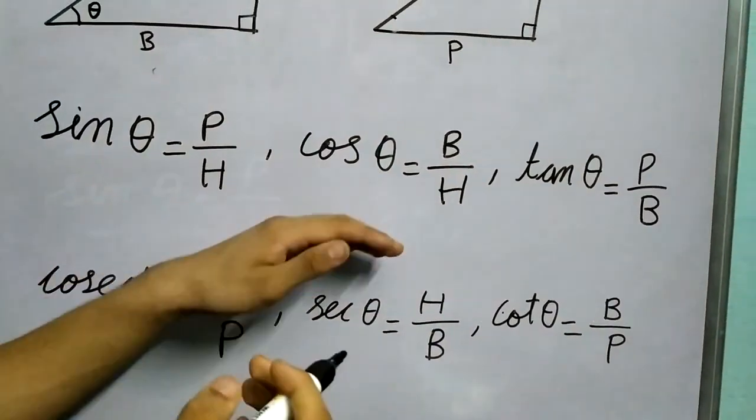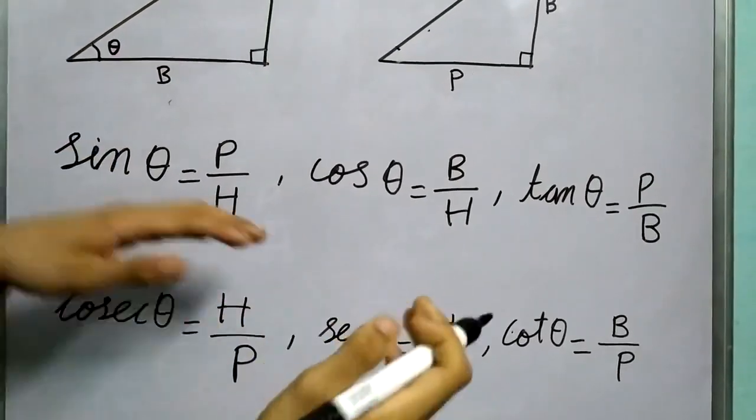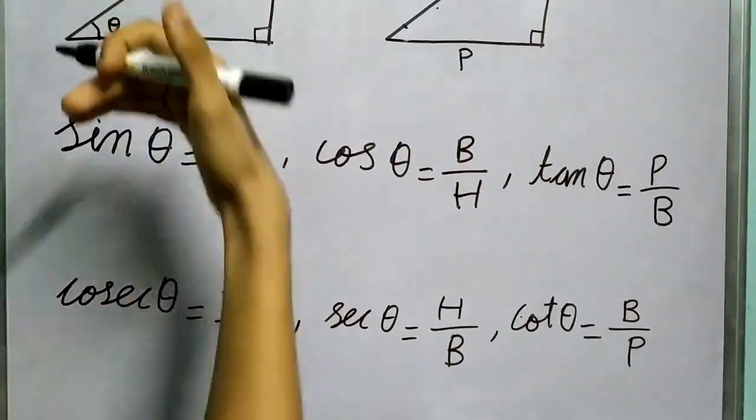So sin θ is P by H, cos θ is B by H (base upon hypotenuse), tan θ is perpendicular upon base.